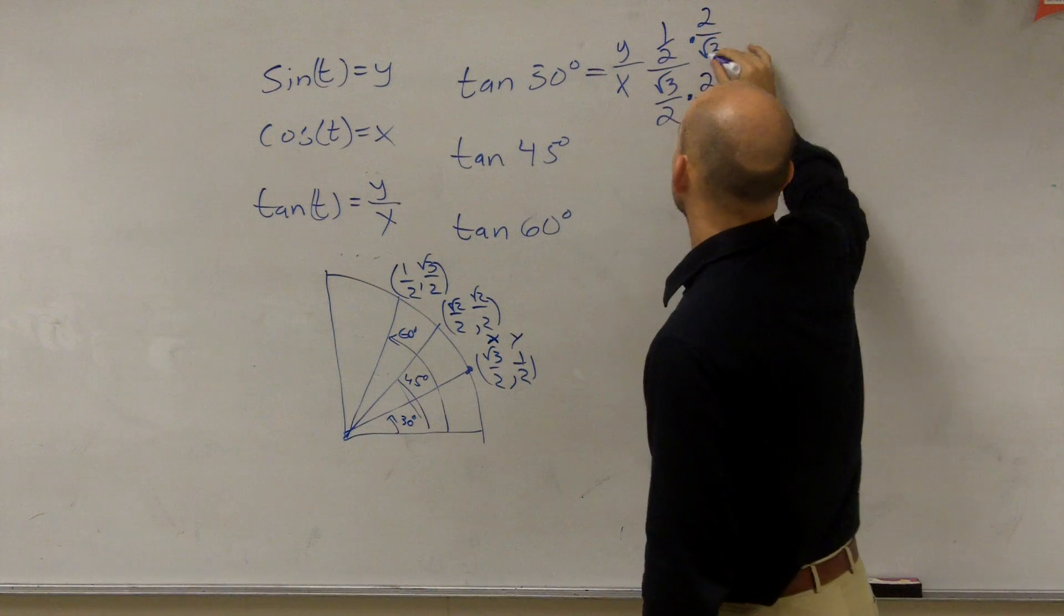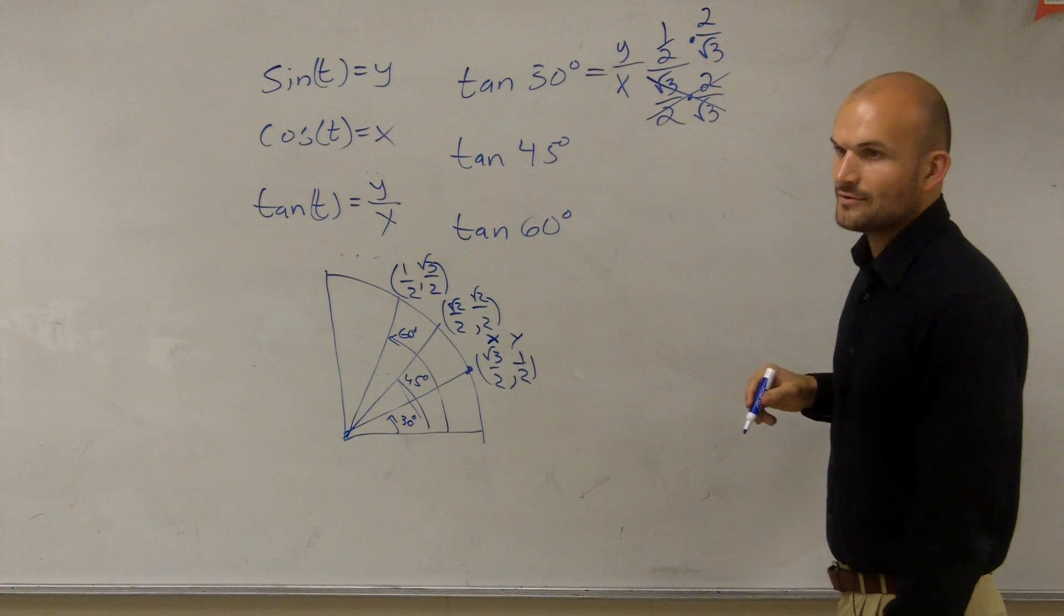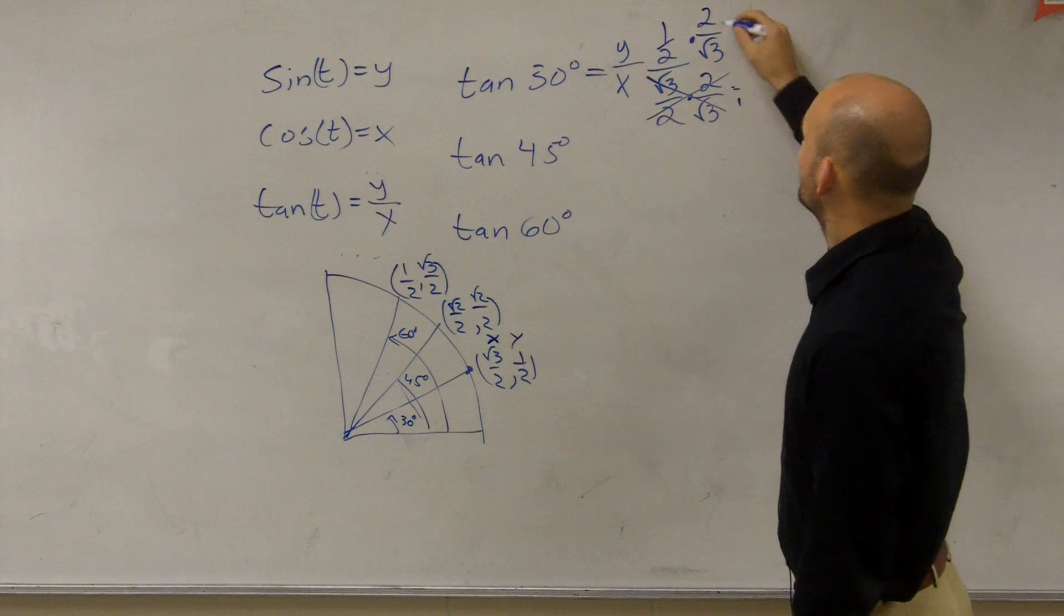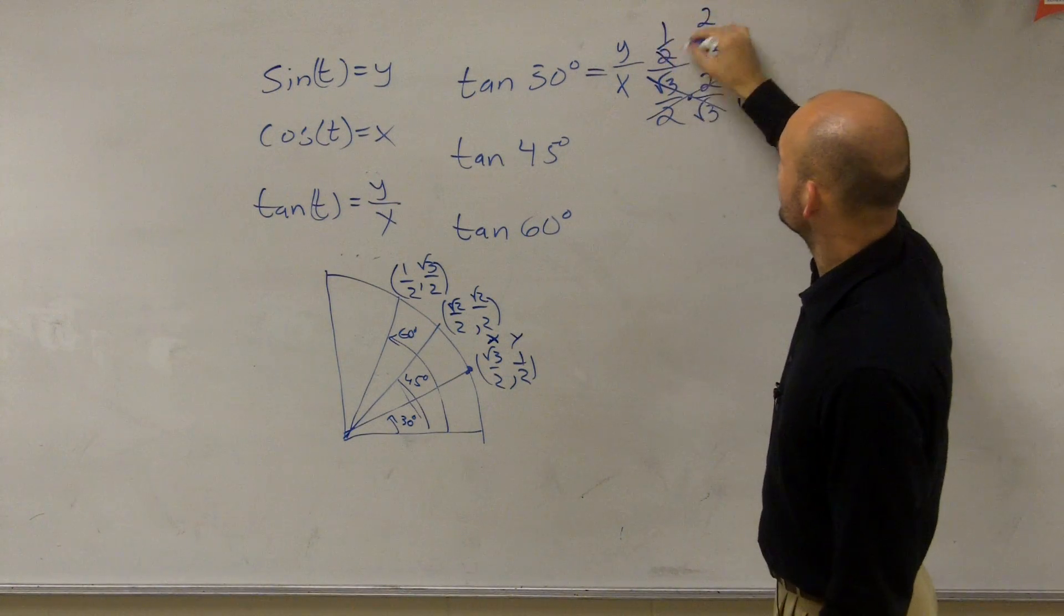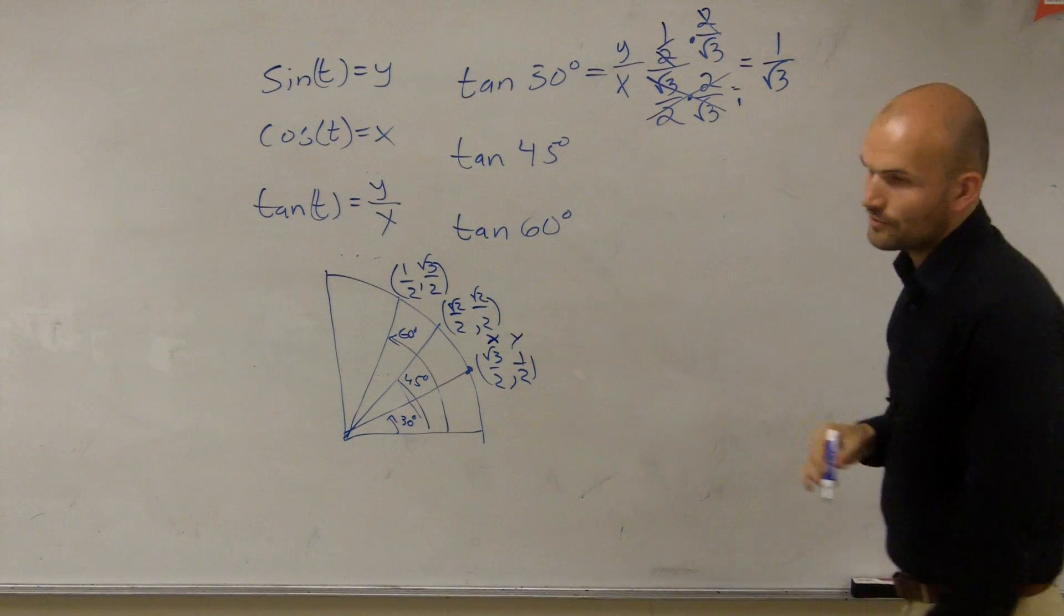Whenever you multiply on the bottom, you have to multiply up top. Any number multiplied by a reciprocal, multiplies out to 1. Then, when you multiply this across, you can say these 2's divide out to 1, so you're just left with 1 over radical 3.